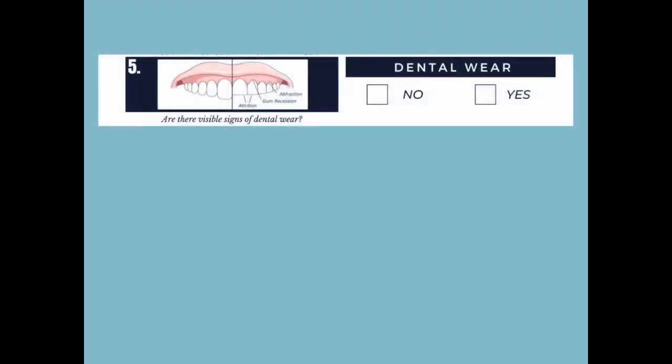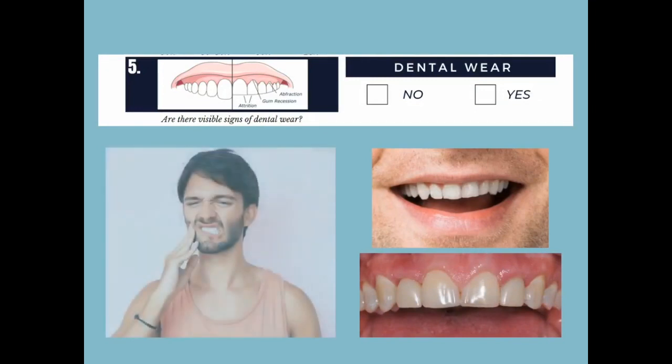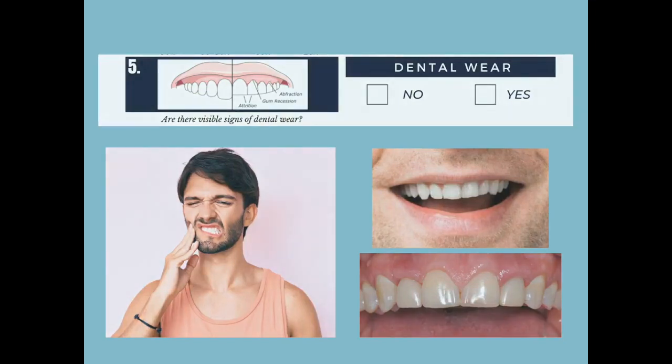Number five: dental wear. Do your patient's teeth appear worn? Do they have a history of clenching or grinding their teeth? If yes, this is a red flag. Clenching or grinding can be an indication of sleep disordered breathing. In cases where there is limited airway space or a collapsing of the airway during sleep — such as with obstructive sleep apnea — the body may try to keep the airway open by clenching the jaws together and pushing the lower jaw forward.